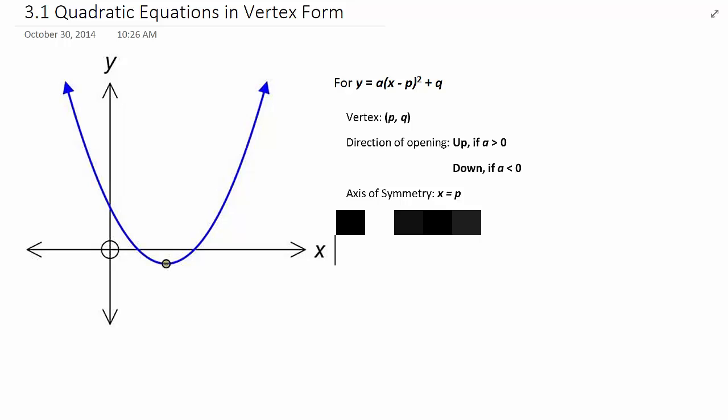If the parabola is opening upwards, it has a minimum value. If it's opening downwards, it has a maximum value. But either way, that minimum or maximum value is that y is equal to q, and the only time it happens is when x is equal to p.